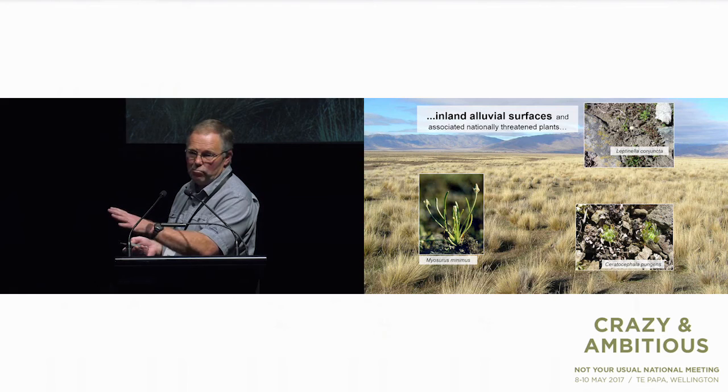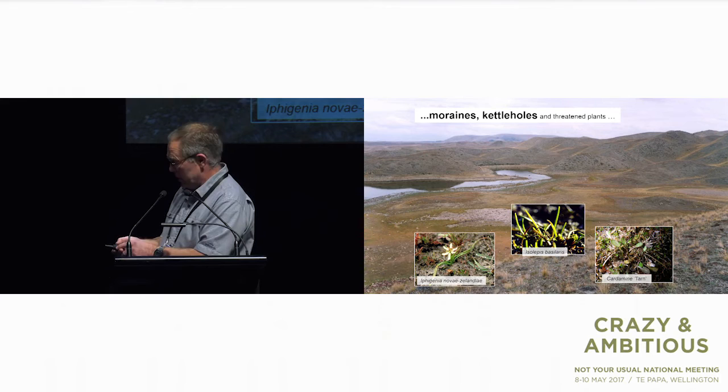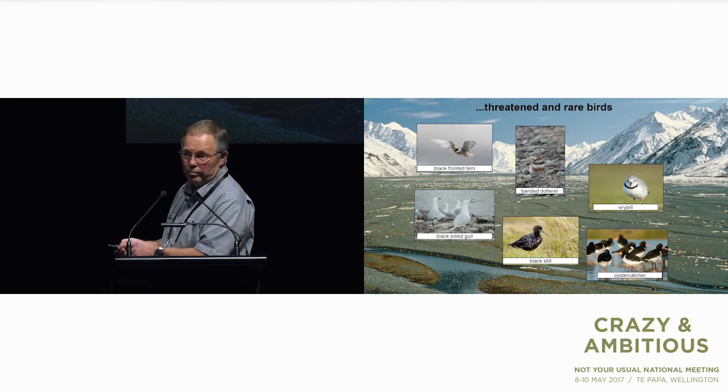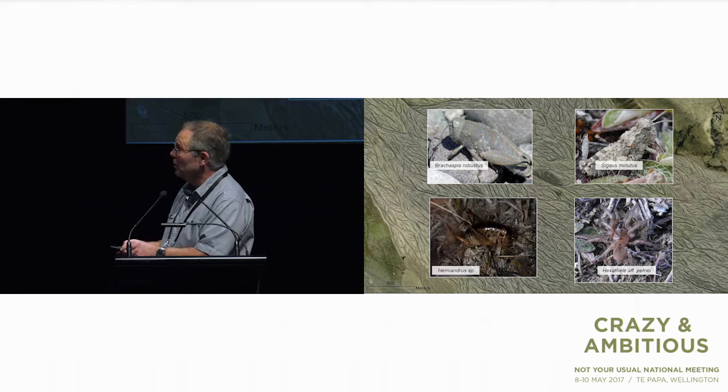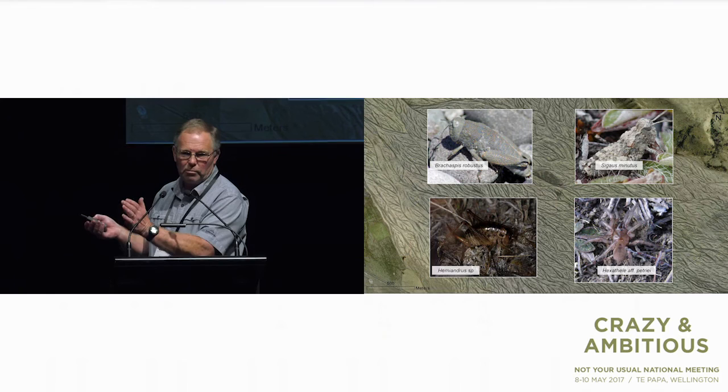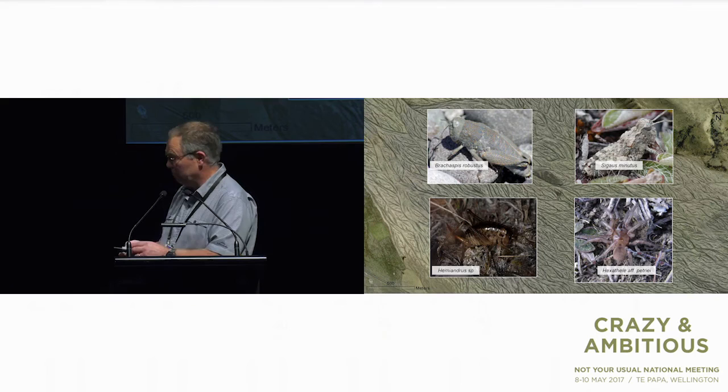Here are some of the rare ecosystems and species: threatened and rare plants, birds such as the black stilt and wrybill, and a range of invertebrates including the robust grasshopper. If you look at those open ecosystems and think the Mackenzie country is headed for a wilding conifer forest, it's hard to imagine these species persisting in a wilding conifer monoculture.